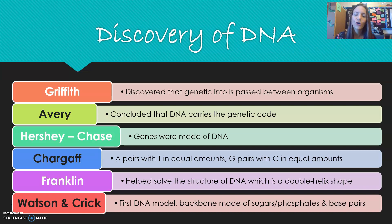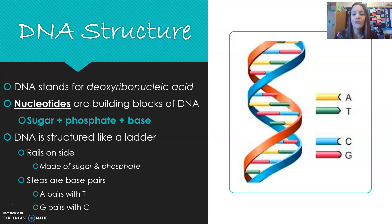Unfortunately, Watson and Crick are credited with the structure of DNA, although there's some controversy because they found out about her image and used it to help them make that final model of DNA — that twisted shape you see. So when we talk about the structure of DNA, first we need to know what DNA stands for: deoxyribonucleic acid.